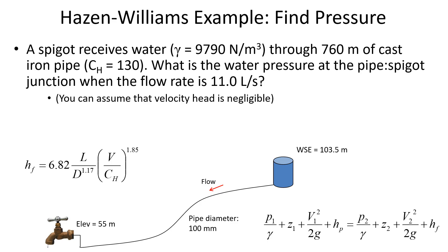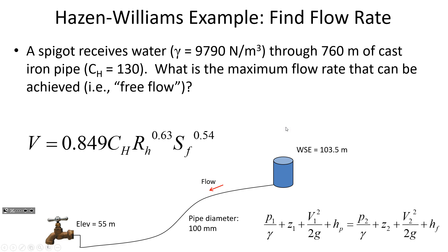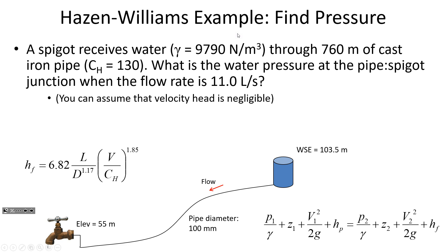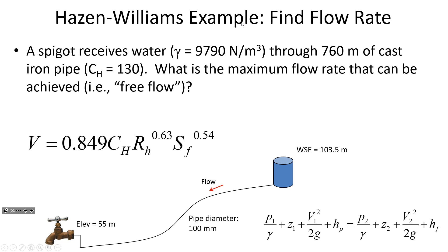In this similar example, instead of a fixed flow rate controlled by the valve, we're going to open the valve all the way and see what flow rate can be achieved. Same origin reservoir with water surface elevation of 103.5 meters, the same 100-millimeter diameter pipe. We want to find the maximum flow rate. In this example, velocity is the unknown, so we don't follow exactly the same steps as before.